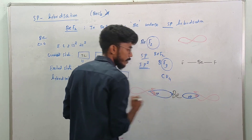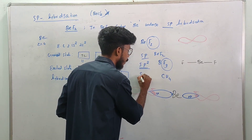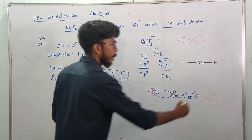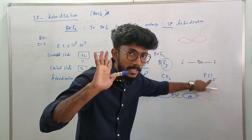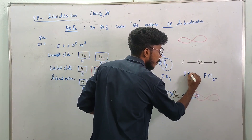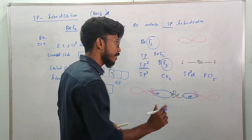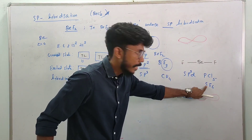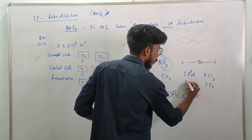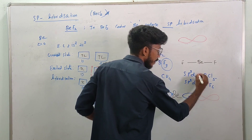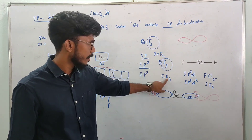This is CH4. If you look at carbon — we have 4 orbitals, that is 1s and 3p — that is sp3 hybridization. For PCl5, phosphorus has 5 orbitals: 1s, 3p, and 1d — sp3d hybridization. For SF6, sulfur has 6 orbitals: 1s, 3p, and 2d — sp3d2 hybridization. This is the shortcut for hybridization.